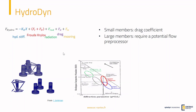Depending on the dimension of each part of the platform, we will use one or the other theory to compute the hydrodynamic loads. For the three main pontoons on the OC4 platform, we will use the potential theory. For this, we need to pre-compute the hydrodynamic database for these pontoons. NREL used the WAMIT preprocessor to get the database, but it can also be others like NEMOH, which is developed at Centrale Nantes, for example.